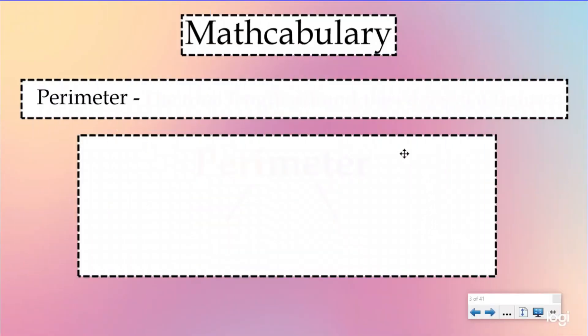We want to start with some mathcabulary first. That way when we say perimeter and we talk about our math terms, we have a common understanding of what we mean here at Instructor Beats. And the first mathcabulary obviously is perimeter. Perimeter is the total length around the edges of a figure.